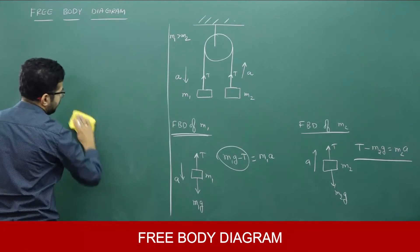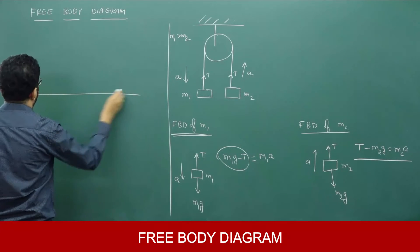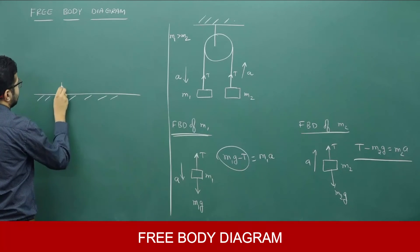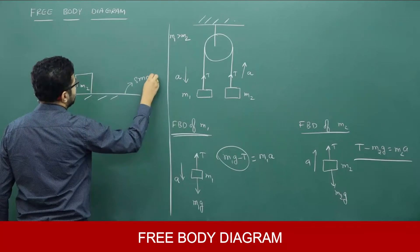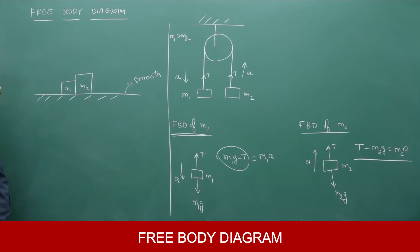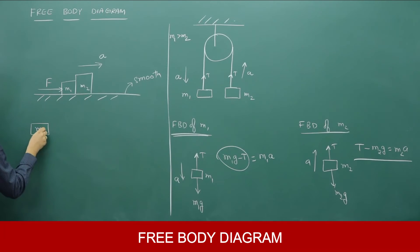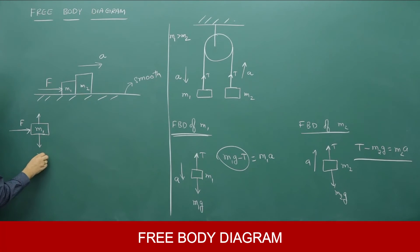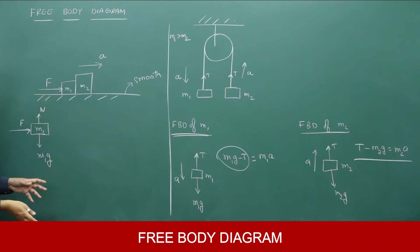Let me write one more situation for better understanding. Say there are two blocks m1 and m2 in contact on a smooth, frictionless surface. Some force F is applied on mass m1, causing the system to accelerate. For the free body diagram of m1: force F acts horizontally, weight m1g acts downward, and normal reaction N acts upward. Since m1 is not moving vertically, N and m1g cancel out, so we only consider horizontal forces.